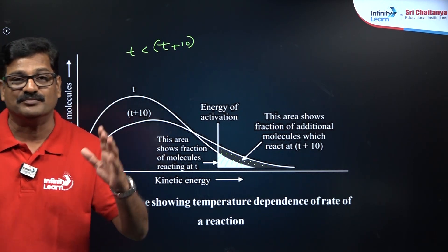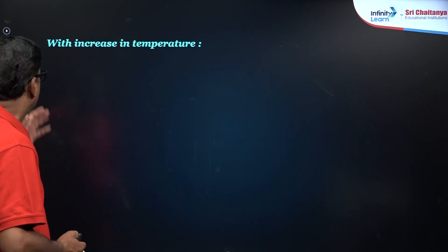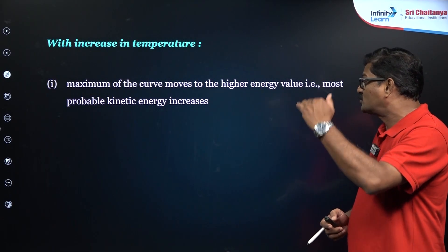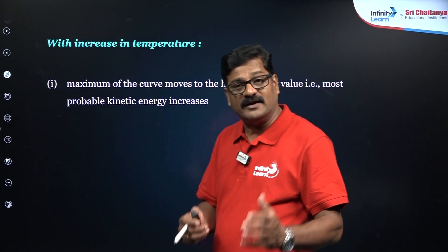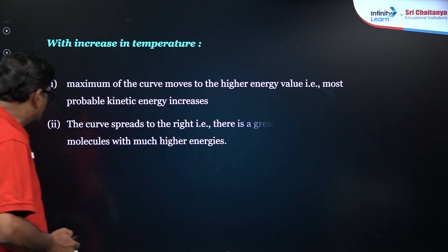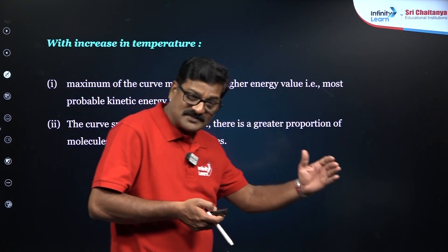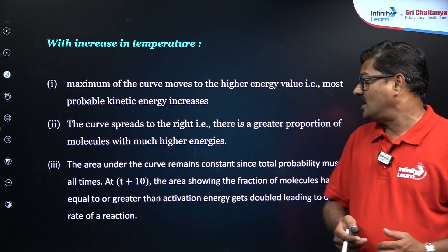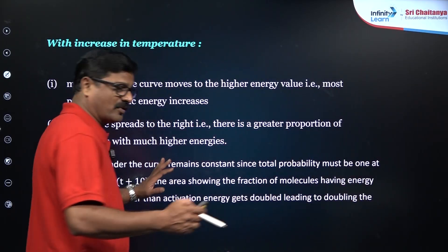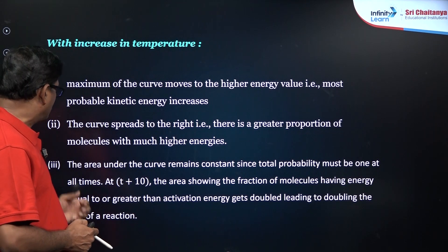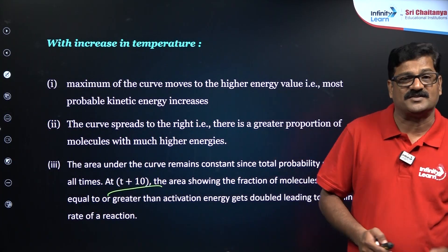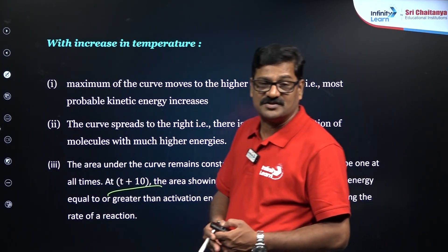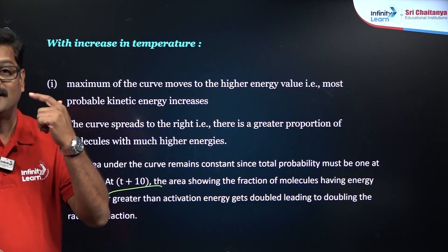With increase in temperature, several things happen to the graph: the minimum of the curve moves to higher kinetic energy values, the most probable kinetic energy increases, the curve spreads to the right, and a greater fraction of molecules has high kinetic energy. The area under the curve remains constant since probability must equal 1 at all times. At T + 10°C, the area showing the fraction of molecules with energy greater than the activation energy increases, so the rate of reaction increases.